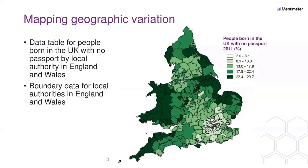Here's an example of how census data can be used to map geographical variations. The map shows England and Wales with a colour-shaded choropleth map showing the percentage of people born in the UK who have no passport. There's quite a lot of darker shading, with lighter shading around London and the southeast, suggesting more people there have passports. There are parts of the country where a higher percentage of people don't have passports. This kind of mapping can be done with many of the variables in the census tables.